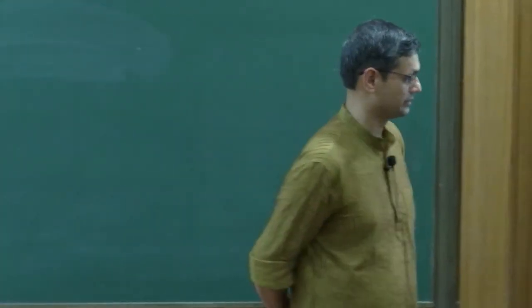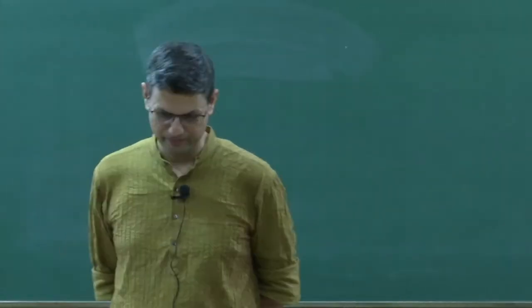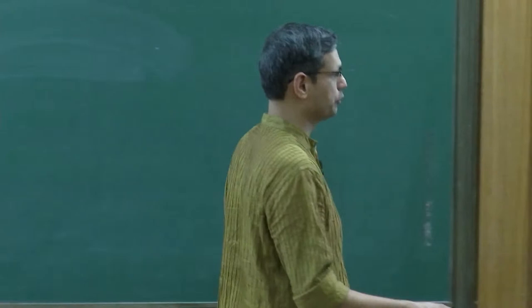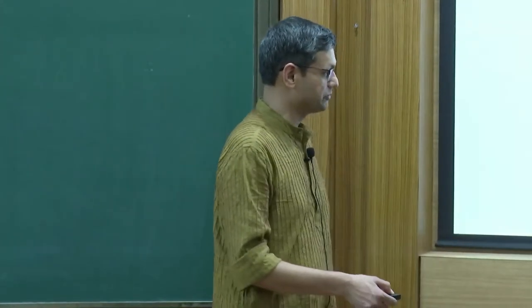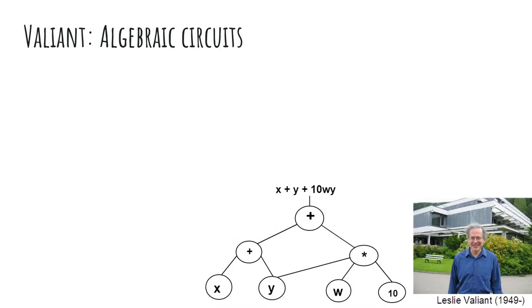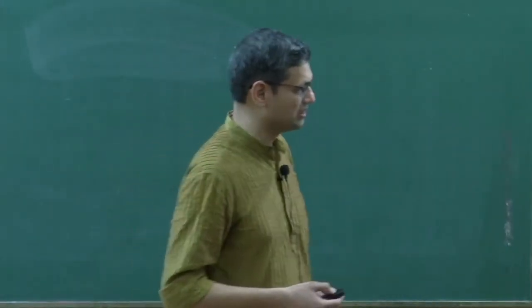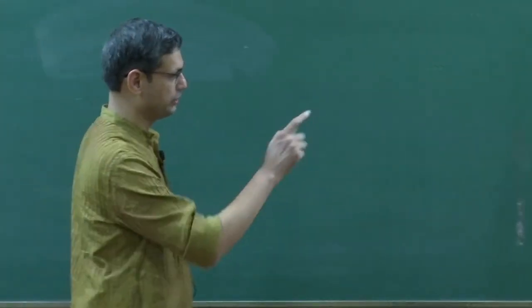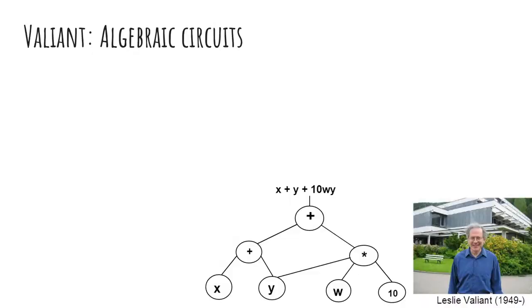There are many things we don't count but practically should, for example, how big are the constants? Square root two requires infinitely many digits — you cannot represent it in any finite representation. In this algebraic model we ignore that; constants can be anything. What we care about is the number of connections and gates, which makes things cleaner for algebraic analysis. Valiant formalized computation and resources using algebraic circuits.